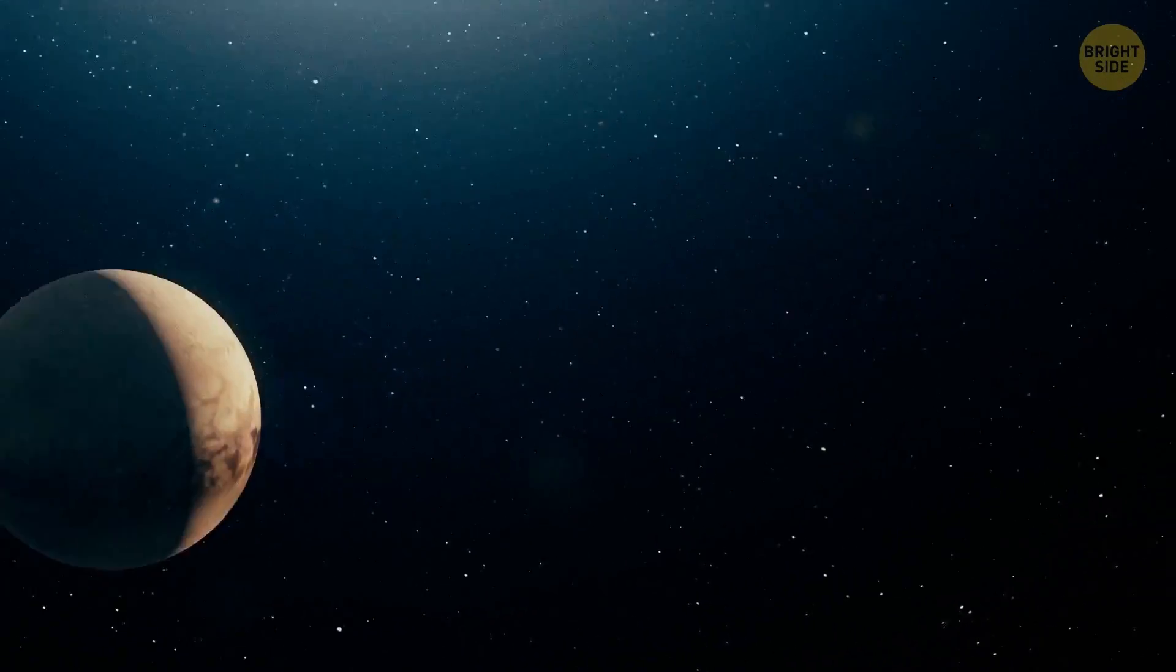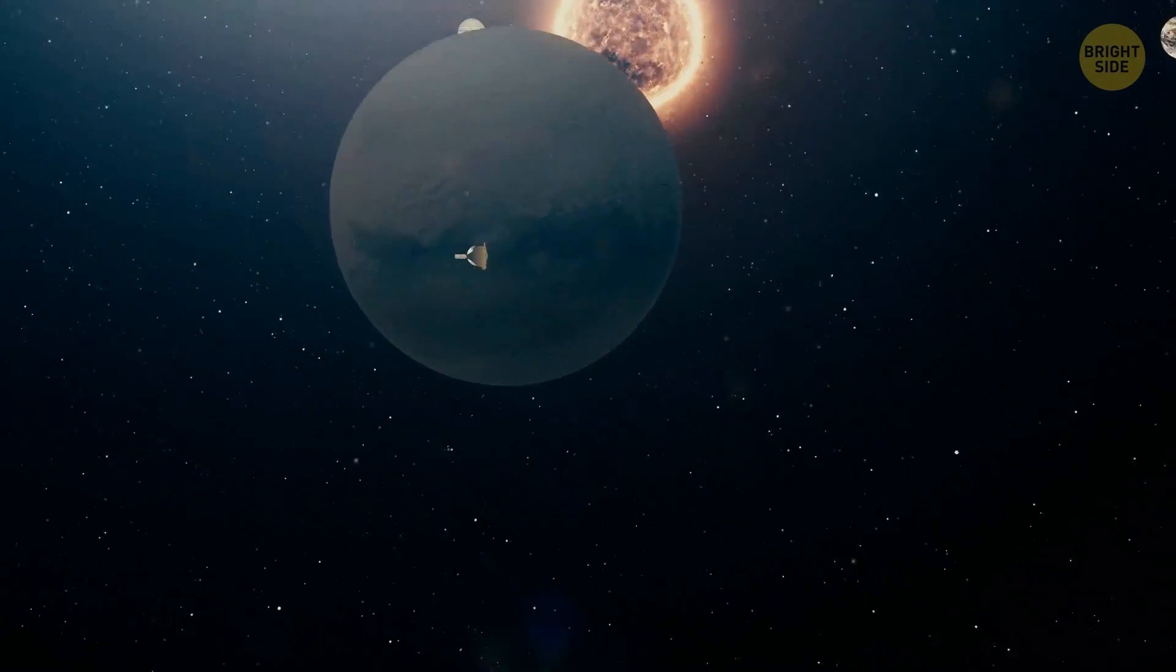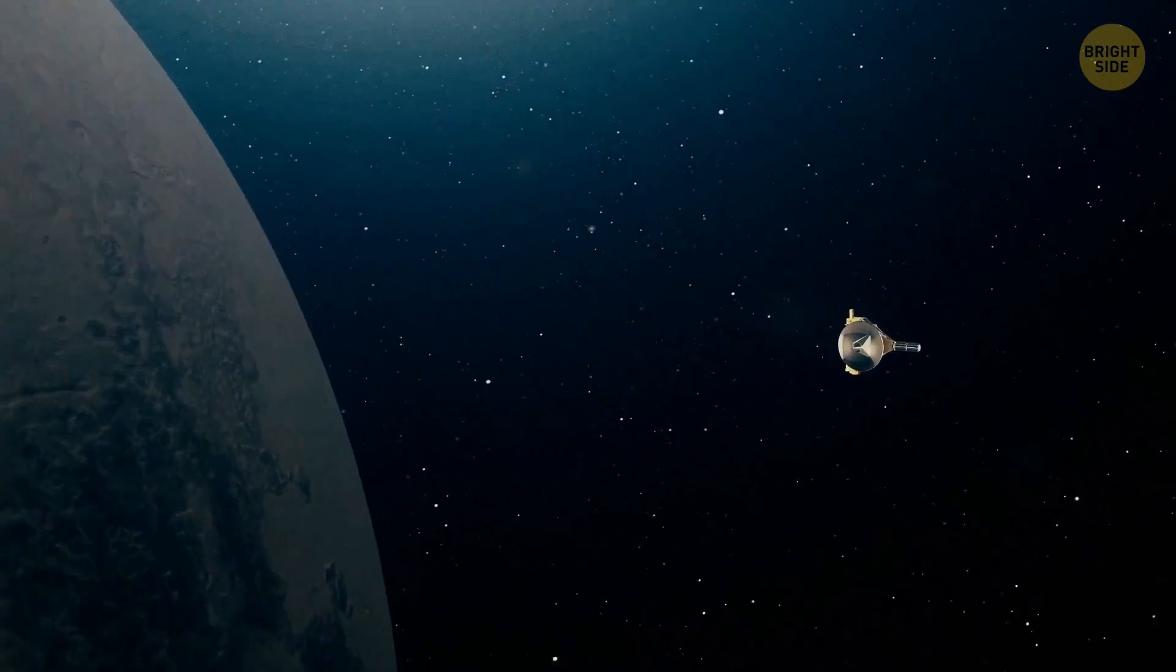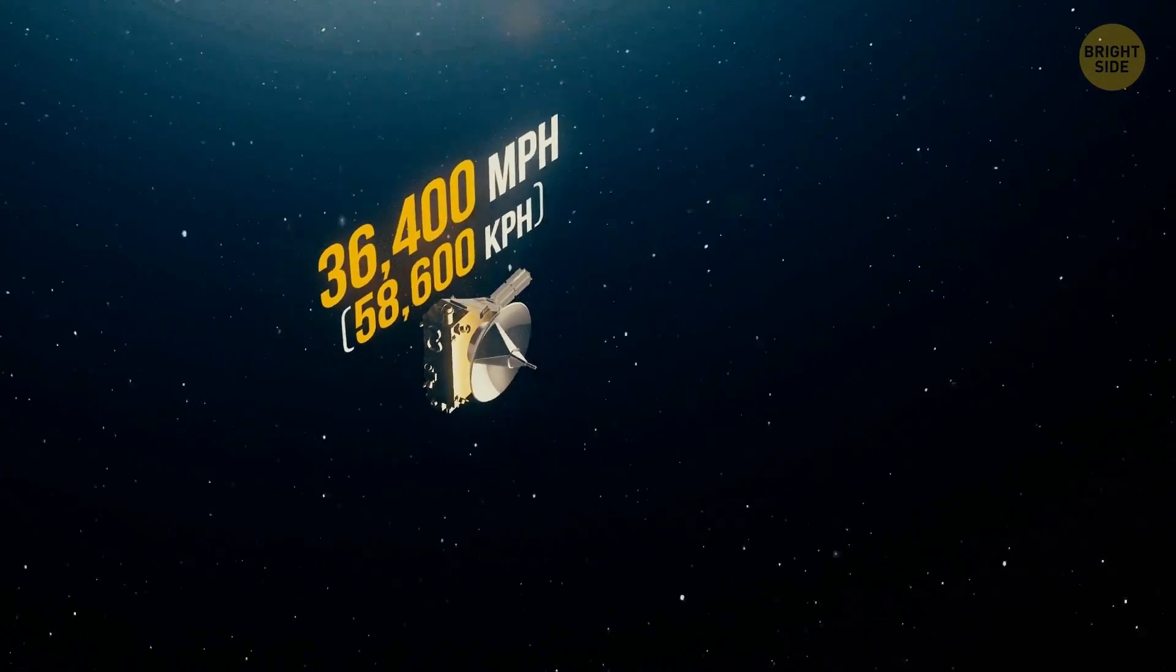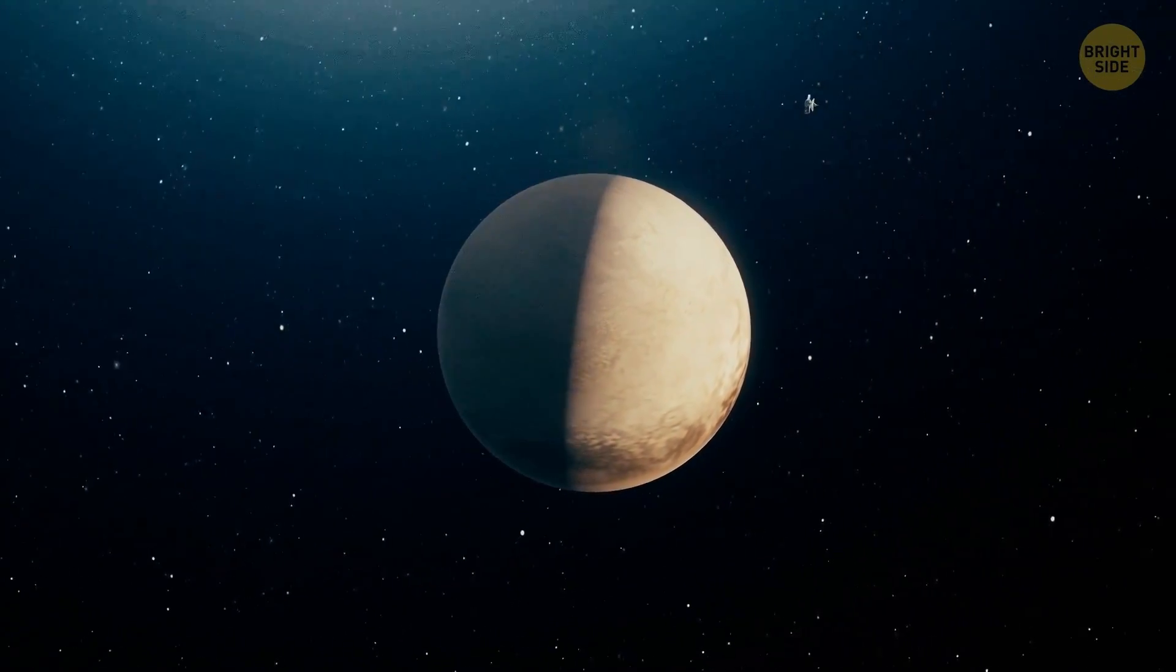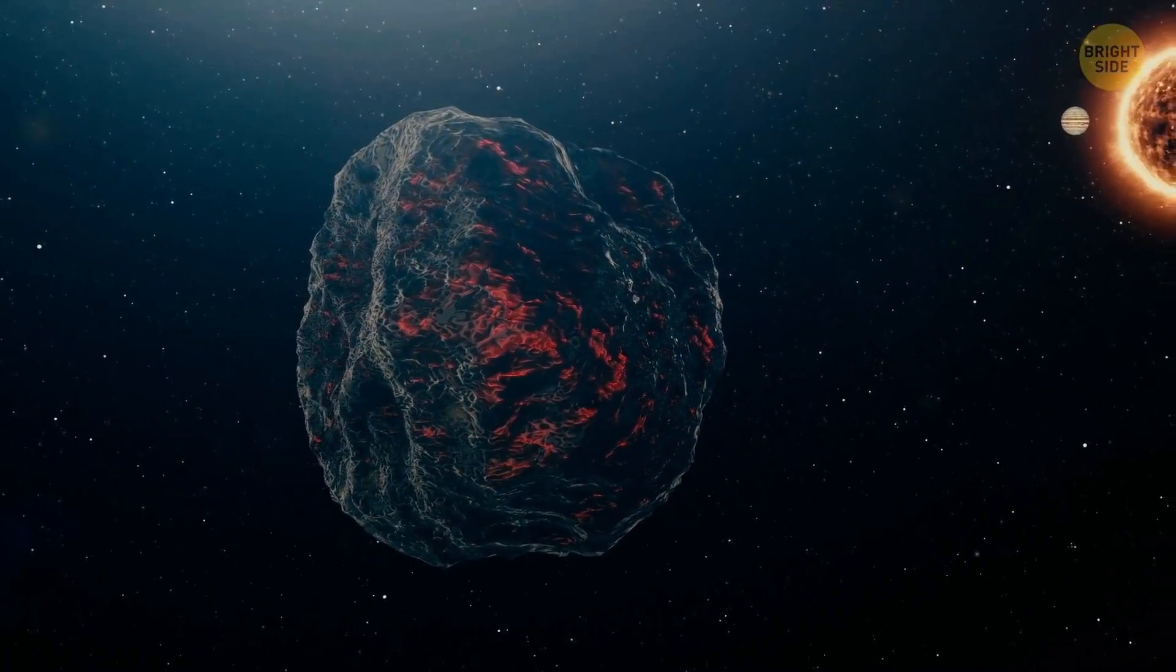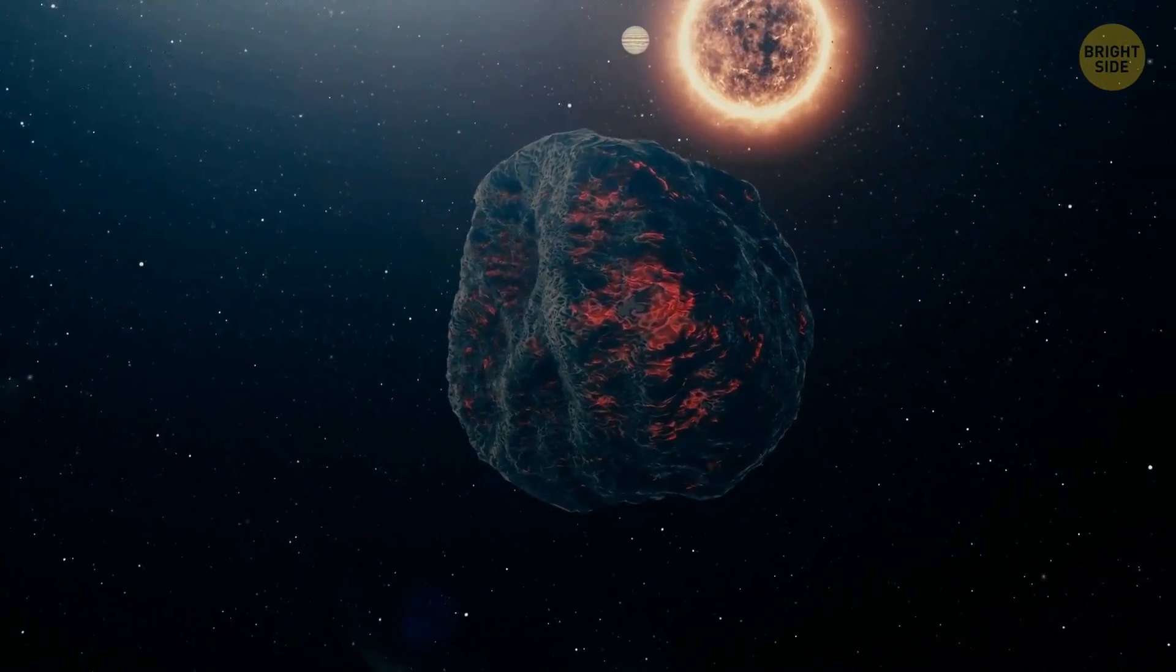Now we're near the dwarf planet Pluto. Yes, recently this baby was excluded from the list of planets of the solar system, around which NASA's New Horizons Automatic Interplanetary Station flies, ranking fifth on our list. It's not even a ship, but a station, which during its mission has developed a maximum speed of 36,400 miles per hour. In 2006, NASA sent New Horizons to study Pluto. And for 13 years, this poor station was just flying and studying the lonely and cold dwarf planet. But in January 2019, it flew to study the nearest asteroid, which, according to conspiracy theories, was a real UFO. But that's another story.